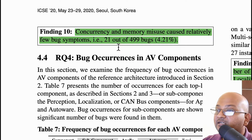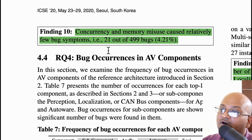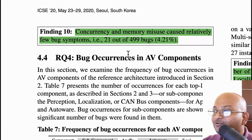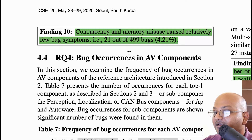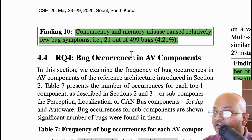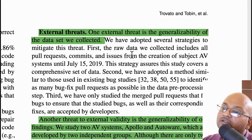I was somewhat surprised to see that, given that a lot of these systems are written in C and C++, only a very small number of bugs were caused by memory safety issues. This might be because the programmers are very diligent with memory and type safety, or it might be because these codebases have not yet come under much adversarial attack.